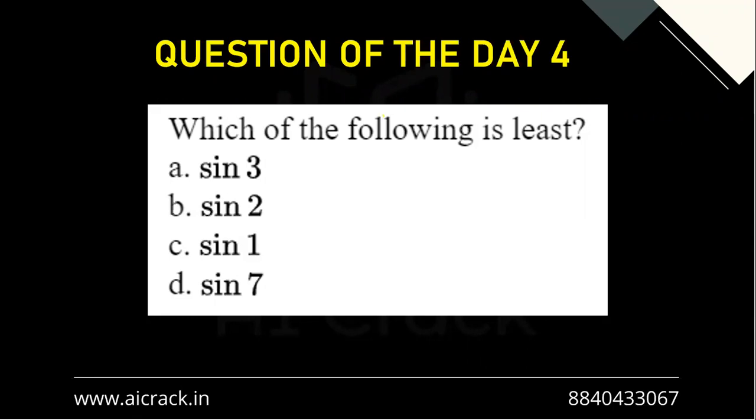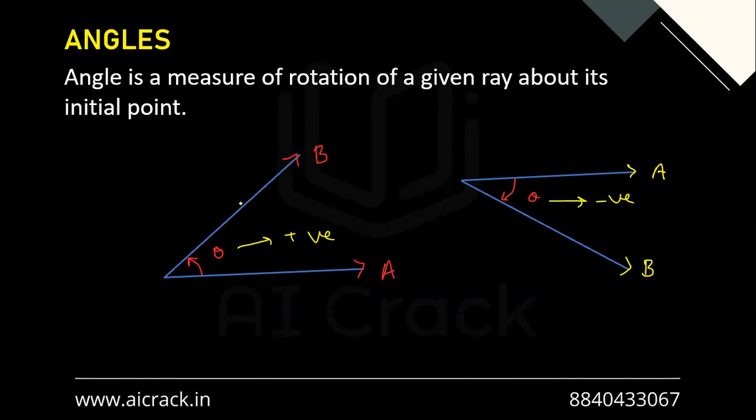The definition of angle needs no introduction. Basically, angle is a measure of rotation of a given ray about its initial point. What is more important is the sign convention: when we go anti-clockwise, theta is positive, and when we go clockwise, theta is negative. It sounds a little counterintuitive, but this is how it is defined.